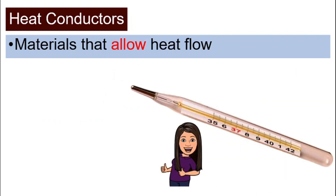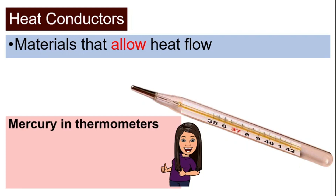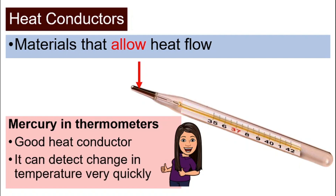Next, a thermometer. Do you know what is inside a thermometer? Mercury is used to make a heat thermometer. Mercury is a very good heat conductor — it can detect changes in temperature very quickly. The mercury kept inside will expand or contract depending on the change of temperature. When the temperature goes up, it expands and hence it rises, and you can read the thermometer reading easily.